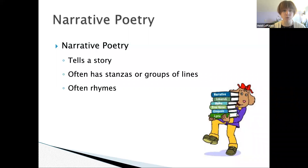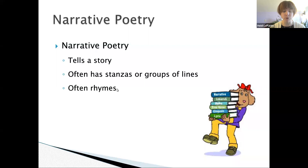We're talking about different forms of poetry today. The first is a poem called narrative poetry. A narrative poem tells a story. It often has stanzas, or groups of lines. Remember, a stanza is like a paragraph in a poem, and the narrative poem often rhymes. Rhyming is when we hear the end sounding of a word that is similar.